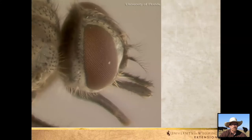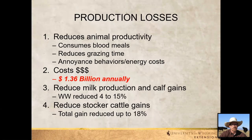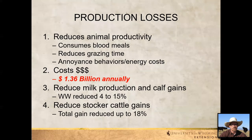Horn flies are well-equipped with a prominent proboscis to penetrate the hide and access blood. As a biting fly, they cause a lot of irritation and ultimately a lot of production losses. When an animal is infested, productivity is reduced because flies are consuming a lot of blood meals and irritating the animal. This reduces the animal's grazing time because cattle are doing annoyance-avoidance behaviors — swinging their head, the paniculus reflex, shaking their hide, stomping their feet, switching their tail. All those behaviors have an energy cost and ultimately affect animal productivity.